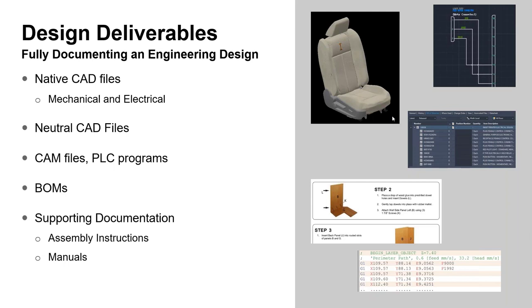There will almost always be a bill of materials - things you've got to make and things you've got to buy. Then there could be any number of supporting documents: assembly instructions, manuals, spec sheets, MSDS sheets for purchased items, renderings, and any number of things to describe the design and explain how it needs to be built and used. There's a lot that goes into describing to parties outside of engineering what needs to be done to execute a design and make it a reality.